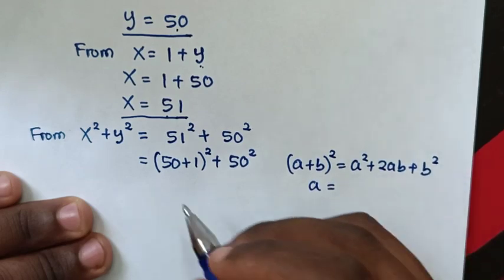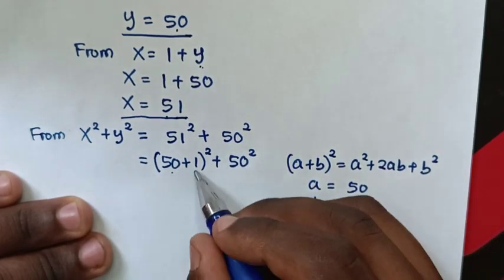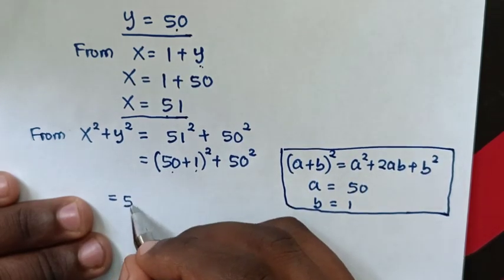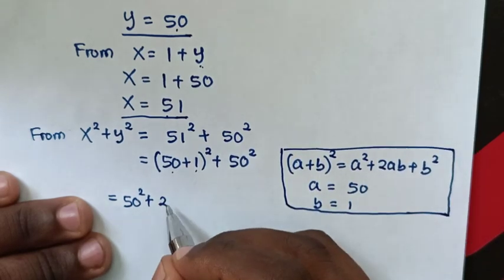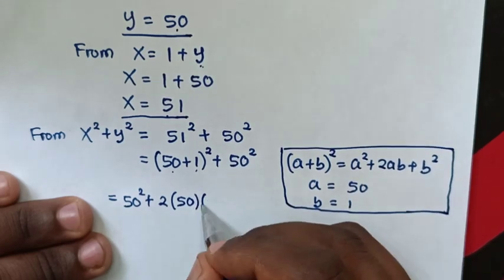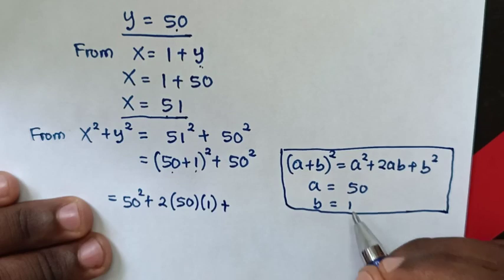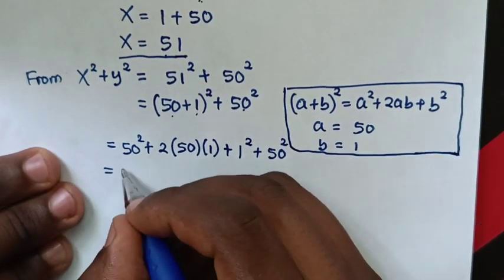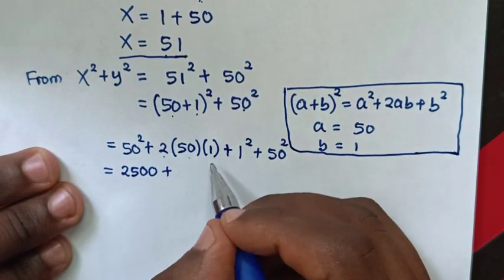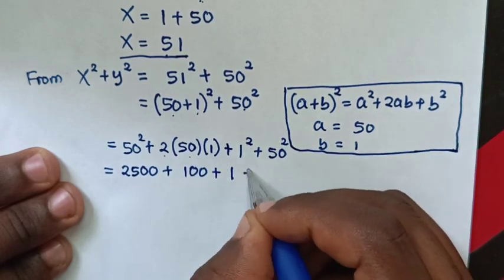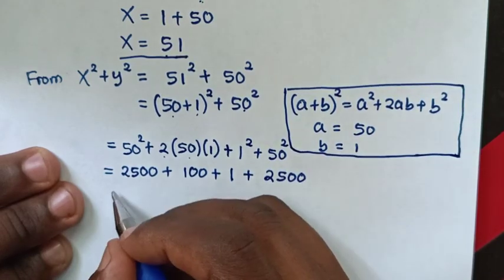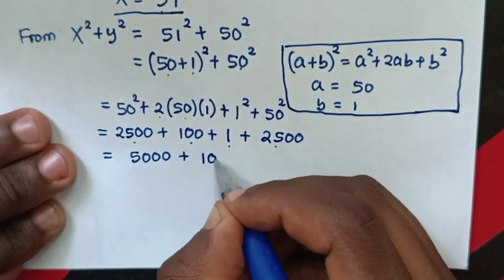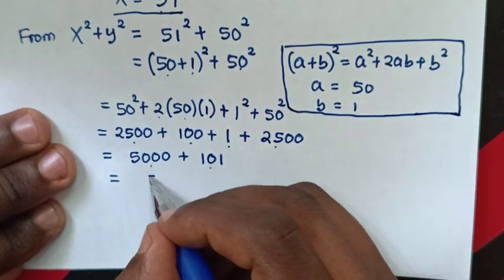With a equals 50 and b equals 1, we expand: 50 squared plus 2 times 50 times 1 plus 1 squared, then plus 50 squared. This gives 2500 plus 100 plus 1 plus 2500, which equals 5000 plus 101, giving us a final answer of 5101.